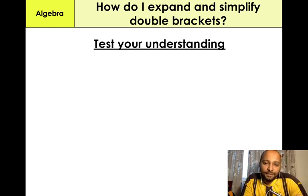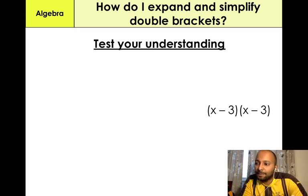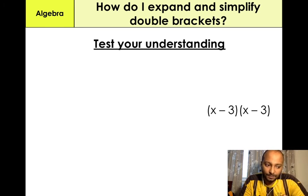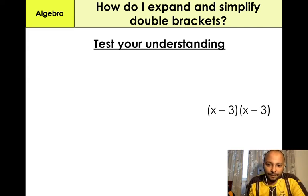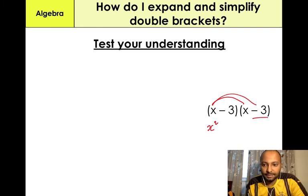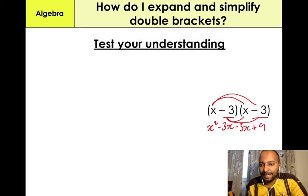I like to have a test-your-understanding concept. Give this question a go — expand the brackets: (x − 3)(x − 3). I'll give you a minute to answer, then I'll answer it for you. So: X times X is X squared. X times minus 3 is minus 3X. Minus 3 times X is minus 3X. Minus 3 times minus 3 gives us a positive 9. Collecting like-for-like terms: minus 3X minus 3X gives us minus 6X. So it's X squared minus 6X plus 9 — that's our final answer. Hopefully you got this answer.